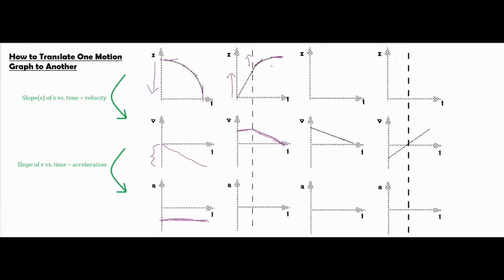I'm going to take the same step that I did in the previous problem and just take a look at my slopes. This slope right here is zero — it doesn't have any slope, so I'm going to put the line right on zero, right on the x-axis. Then I'm going to look at this slope: it's a constant negative slope, so I have a constant negative acceleration, and then we're done with the second problem.